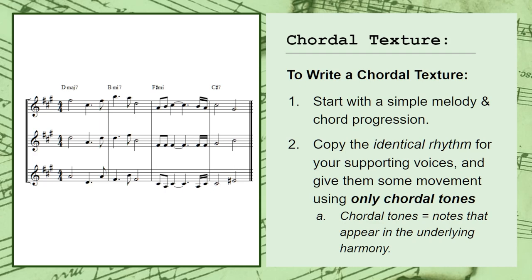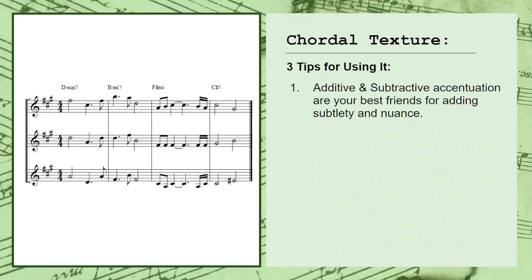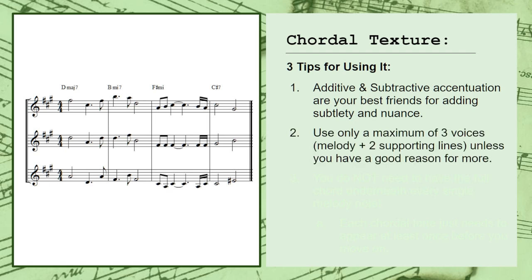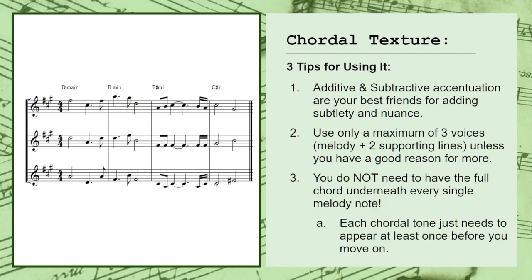As with the previous two textures, here are some tips for the chordal texture as well. Additive and subtractive accentuation are your best friends for adding subtlety and nuance. You'll want to stick to three voices maximum — just a melody and two support lines — unless you have a good reason to create more. This helps ensure both balance and clarity in your sound. Finally, you do not have to write the full chord under each note in the melody. You can even create seemingly new chords between the melody and the chordal tones in the support voices. The only rule is that you use each essential tone at least once before changing chords.